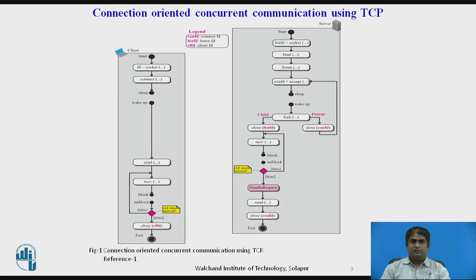Here you can see the simple flow diagram for communication using TCP. The server process starts first, then it calls the socket function to create a socket. This socket is only used during connection establishment. The server process then calls the bind function to bind this connection to the socket address of the server.